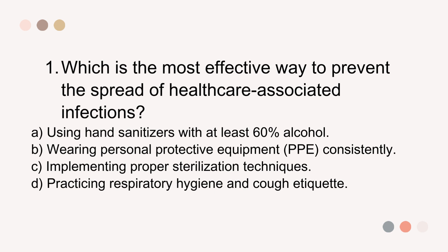Question 1. Which is the most effective way to prevent the spread of healthcare-associated infections? A. Using hand sanitizers with at least 60% alcohol. B. Wearing personal protective equipment (PPE) consistently. C. Implementing proper sterilization techniques. D. Practicing respiratory hygiene and cough etiquette.